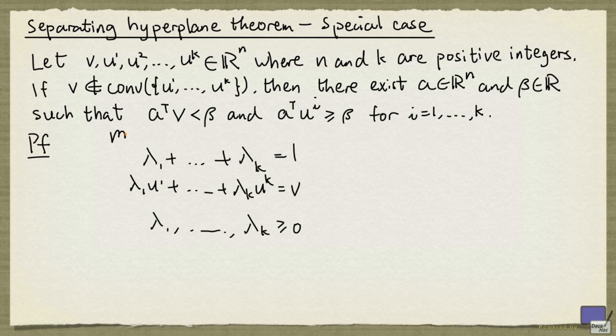Let's look at the following linear programming problem. So we're minimizing 0 times lambda 1 plus all the way to 0 times lambda k, subject to these constraints. Then we know that this problem is infeasible.